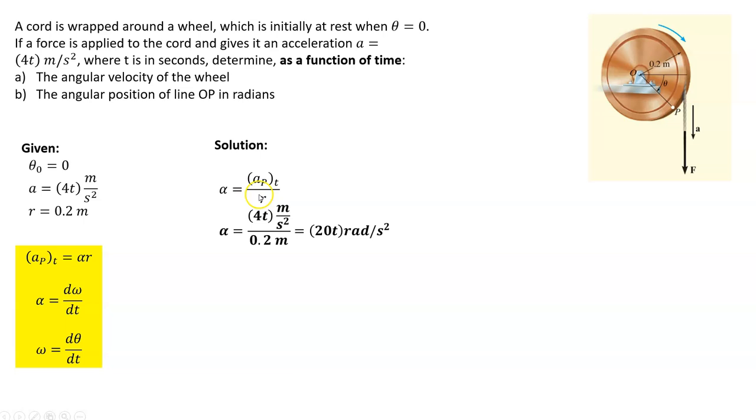And this function divided by the radius is 4t meters per second squared divided by 0.2 meters - meters cancel out and we have 20t radians per second squared.